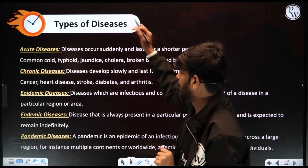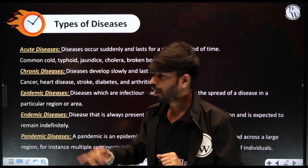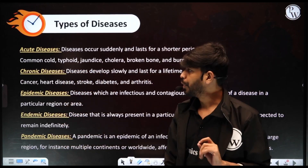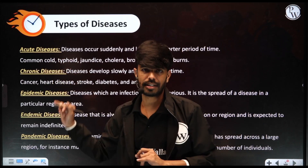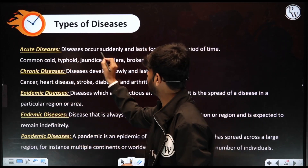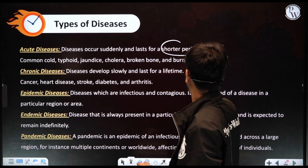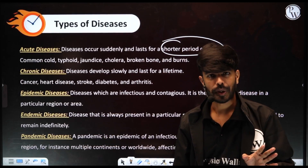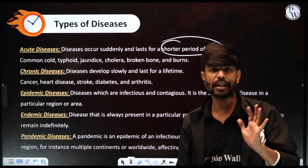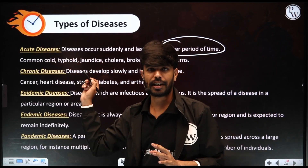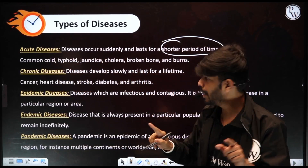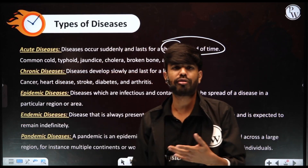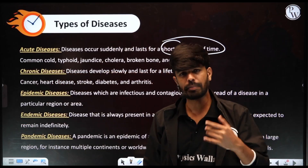The types of diseases are: acute diseases, chronic diseases, epidemic, endemic, and pandemic diseases. Acute diseases are diseases that occur suddenly and last for a shorter period of time — they come and go quickly. The disease appears suddenly and then disappears. So this is what we call an acute disease.